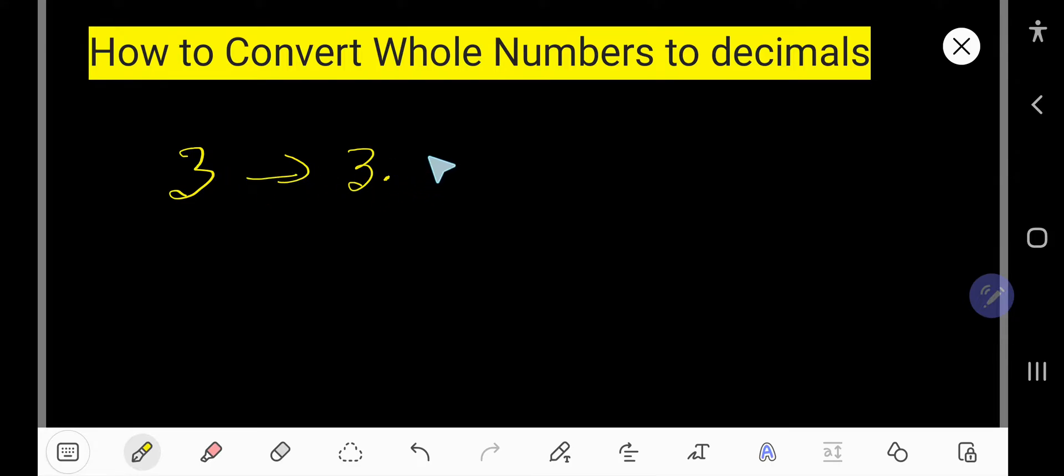Then you have to take the decimal point, and then you have to take zero. You can take any number of zeros after the decimal point.